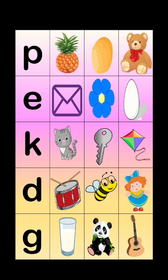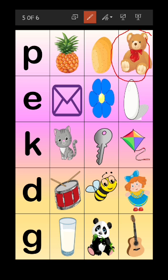Now look at the objects for letter P: P for pineapple, P for potato. And the last object is a teddy bear. Does teddy bear come from letter P? No! So this is the odd one - it does not come from letter P. So you have to circle the teddy bear, because it does not come from letter P.